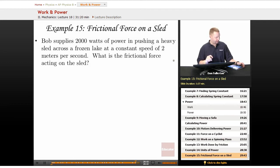Example 15: The frictional force on a sled. Bob supplies 2,000 watts of power, P equals 2,000 watts, in pushing a heavy sled across a frozen lake at a constant speed of 2 meters per second.